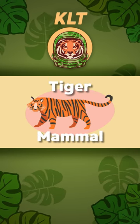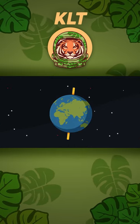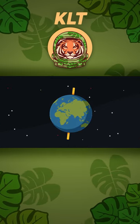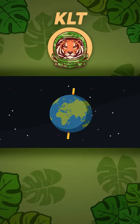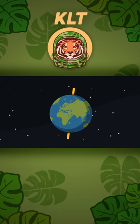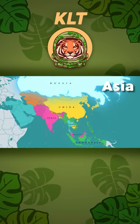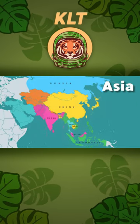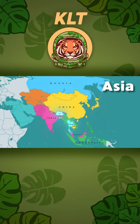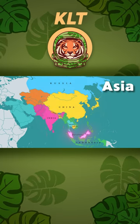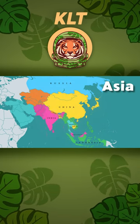Tigers live in various countries in the continent of Asia. Let's name a few countries — take a look and I'll show you: India, Russia, Bangladesh, Nepal, China, and Bhutan, Thailand, Malaysia, Indonesia, and Cambodia.